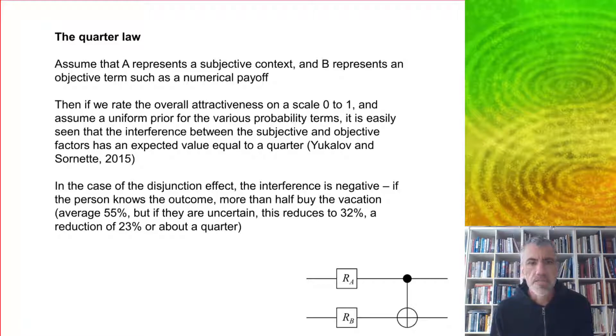In the case of the disjunction effect, the interference is negative. If the person knows the outcome, more than half buy the vacation, so average 55%. But if they are uncertain, this reduces to 32%, which is a reduction of 23%, or about a quarter. We can model all of this using our all-purpose circuit.